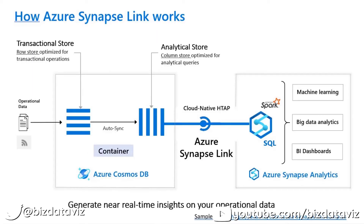With regard to Azure Synapse Link connecting to Azure Cosmos DB, the transaction store built in Cosmos has the ability to automatically sync to an analytical store within the same container. This allows us to connect directly for analytics using Synapse Compute, whether we choose SQL clusters or Spark-based cluster operations. With this capability, the result would be the same — we achieve near real-time insight into what's happening in our transactional systems.